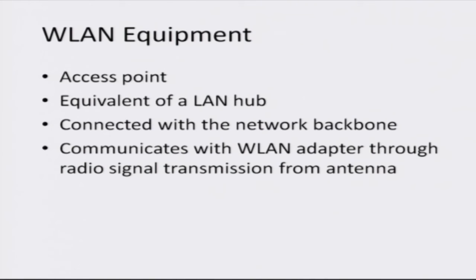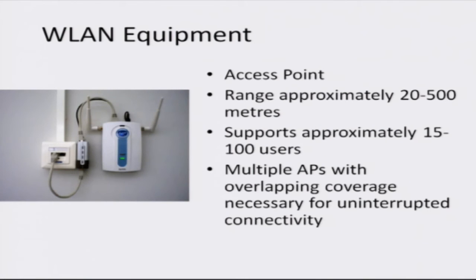WLAN typically consists of access points, which are equivalent to LAN hubs. These access points communicate with WLAN adapters through antennas on devices such as smartphones and laptops. A WLAN access point typically has a range of about 20 to 500 meters — much shorter than a cellular network which covers several kilometers — and supports about 15 to 100 users. Therefore, a large hotspot with many users requires multiple access points.